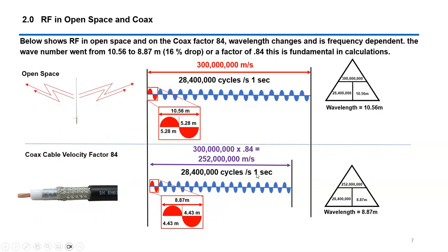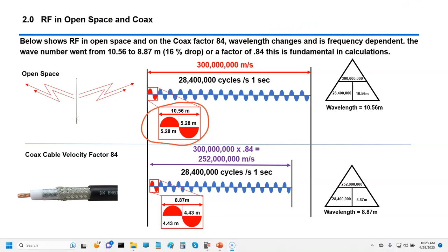This shows how RF in open space and the coax velocity factor of 0.84 changes the wavelength — it is frequency dependent. The wavelength went from 10.56 meters in open air to 8.87 meters on the coax — a 16% drop. My coax has a velocity factor of 0.84, so instead of traveling 300 million meters per second, the RF now only travels 252 million meters per second along the feed line. It's the same number of cycles; it's just moving slower.